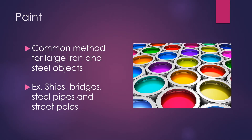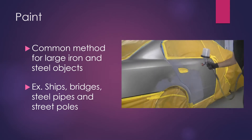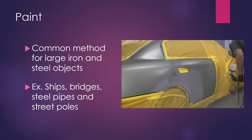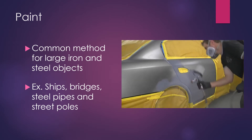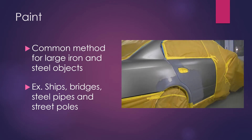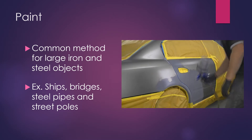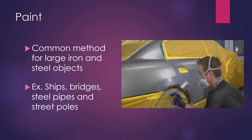The first example is paint. Paint is the most common method for large iron and steel objects, such as ships, bridges, steel pipes, and steel poles. You paint the iron or steel object with paint, and the paint will stop the air and water from reaching the objects.